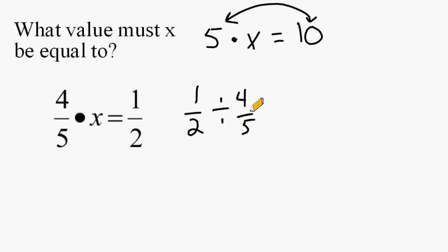Once you have written your problem, you have to rewrite your first fraction exactly as it is, change your sign to multiplication, and write the reciprocal of the second fraction. So we write 4 fifths as 5 fourths.